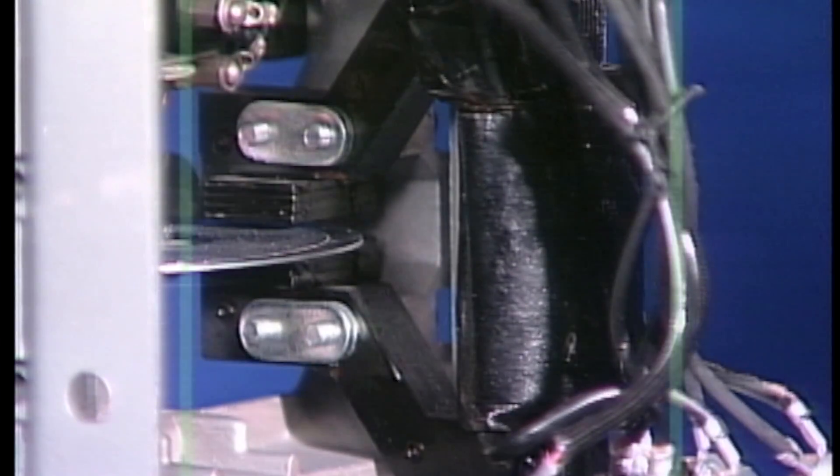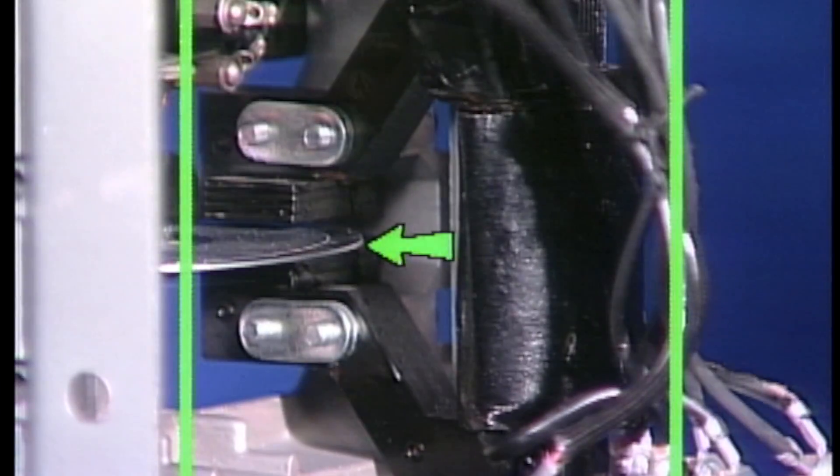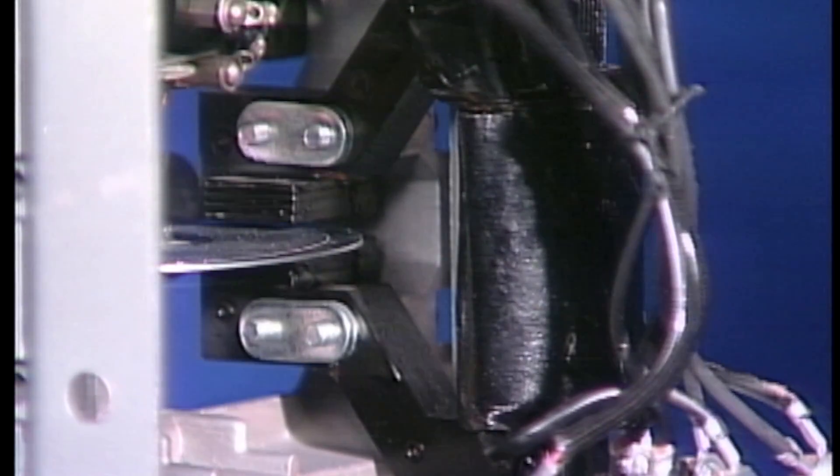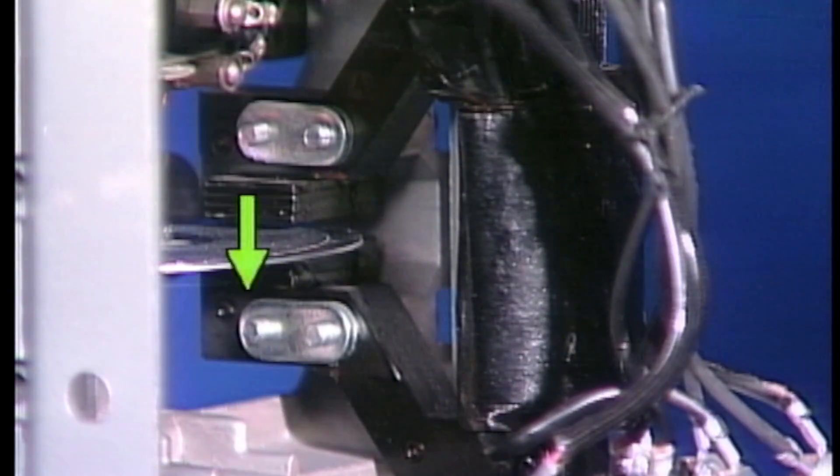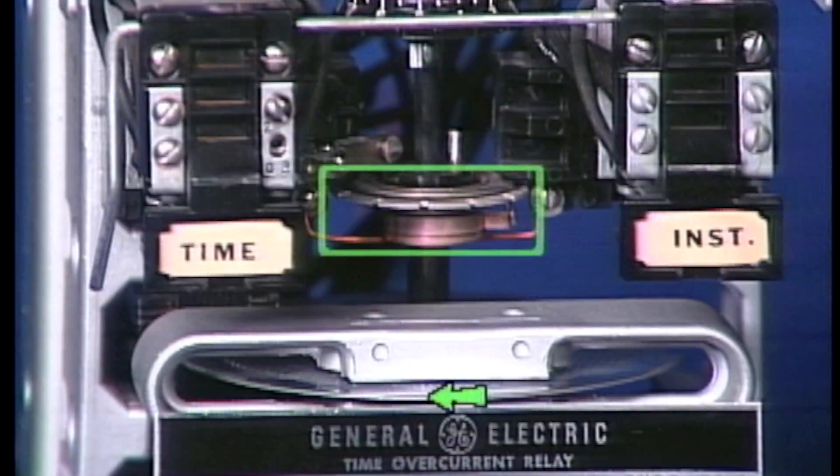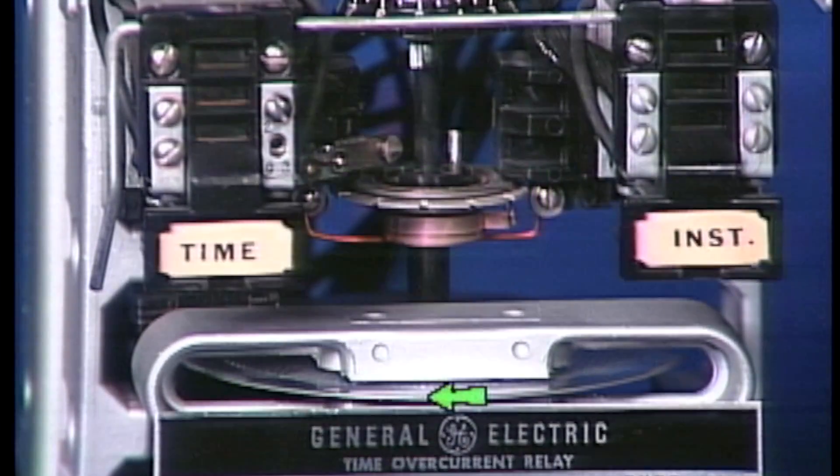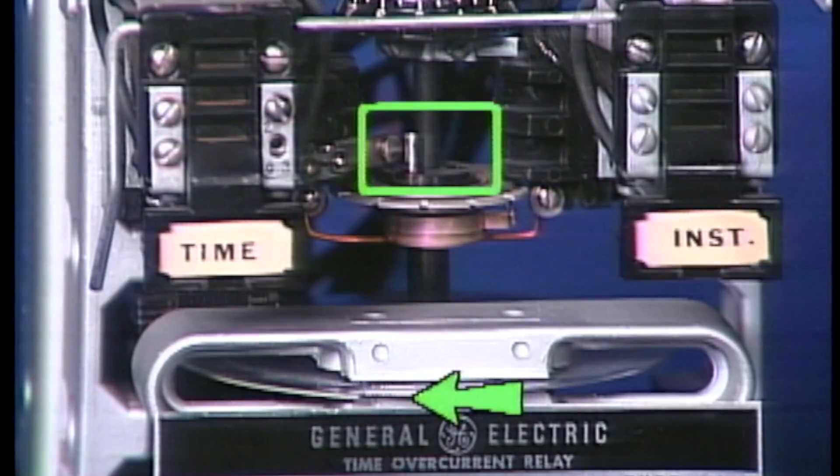A relay with an induction disc element has an electromagnet that is intersected by a metallic disc. Input to the relay creates a magnetic field in the electromagnet that cuts through the disc, producing a torque on the disc. The torque is opposed by the tension of a restraining spring. When input to the relay changes beyond a desired value, the torque overcomes the spring, causing the disc to rotate and close the relay's contacts.